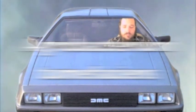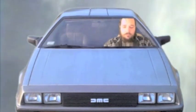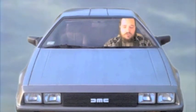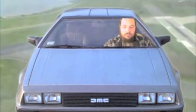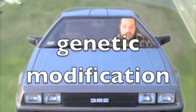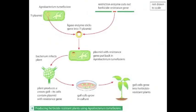Agrobacterium tumefaciens is a bacterium which lives in the soil. In the early 1980s, scientists learned how to transfer the gene controlling herbicide resistance into crop plants using Agrobacterium — this is genetic modification. A plant infected with Agrobacterium produces a cancerous growth or tumour called a crown gall. We can use Agrobacterium as a vector to transfer genes controlling herbicide resistance into the genetic material of plant cells.